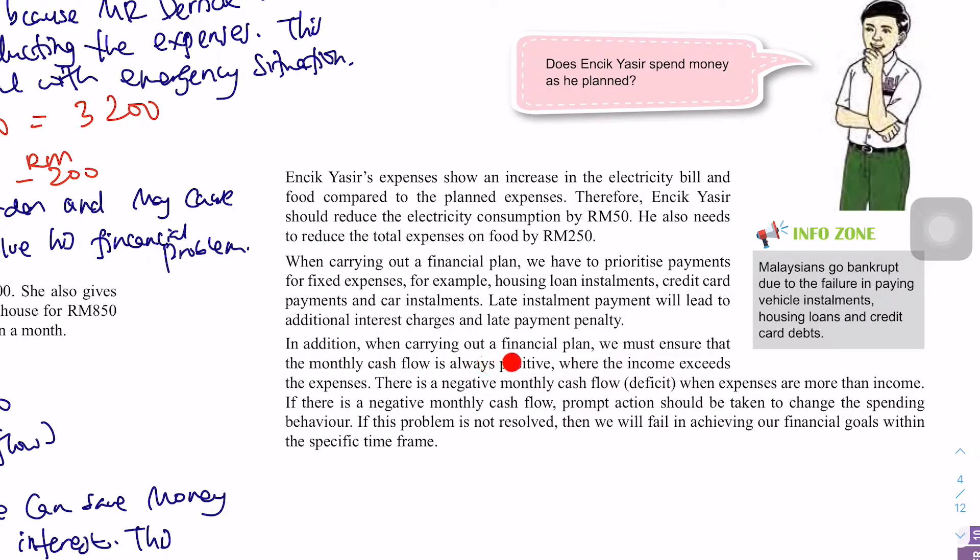In addition, when carrying out a financial plan, we must ensure that the monthly cash flow is always positive. Ingat, kena lebih duit kita. Jangan negative. When the income exceeds the expenses. There is a negative monthly cash flow deficit when expenses are more than income. If there is a negative monthly cash flow, prompt action should be taken to change the spending behavior. Kalau dah tahu, pembelanjaan kita melebihi pendapatan, kita kena ubah behavior spending kita. Tabiat pembelanjaan kita kena ubah. Membeli pada apa yang kita perlukan sahaja. Bukan apa orang kata, kehendak ke keperluan. If this problem is not resolved, then we will fail in achieving our financial goal within the specific time frame.